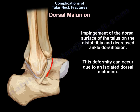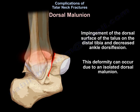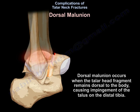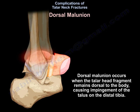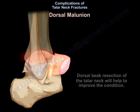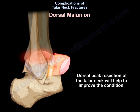Dorsal malunion causes impingement of the talus on the distal tibia and decreased ankle dorsiflexion. This deformity can occur due to an isolated dorsal malunion. Dorsal malunion occurs when the head fragment remains dorsal to the body, causing impingement of the talus on the distal tibia. Dorsal beak resection of the talus neck will help to improve the condition.